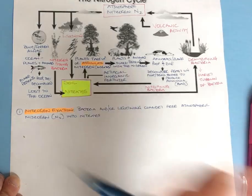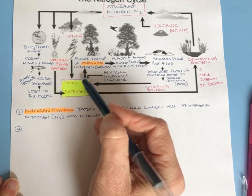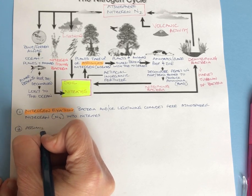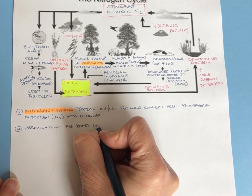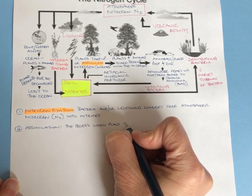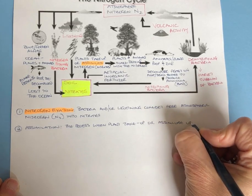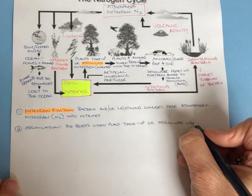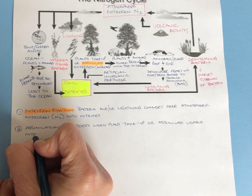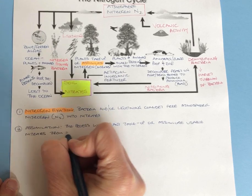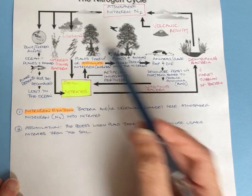The second part of this is assimilation. We have nitrates in the soil, and now the plants assimilate them — they take them up. Assimilation is the process when plants take up usable nitrates from the soil. The nitrogen is now in a form that can be used, and the plants start to use it.